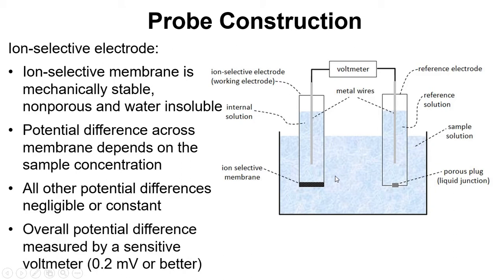The overall potential difference is measured by a sensitive voltmeter at 0.2 millivolts or better. And so overall that is the probe construction for an ion-selective electrode with the reference electrode.